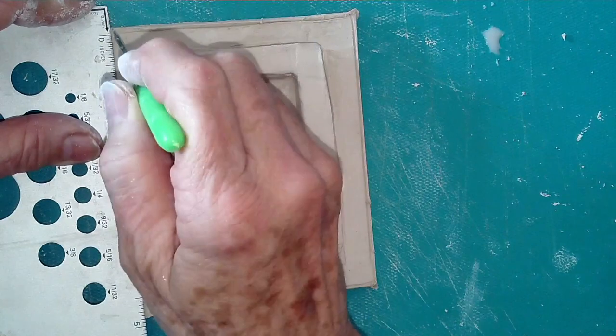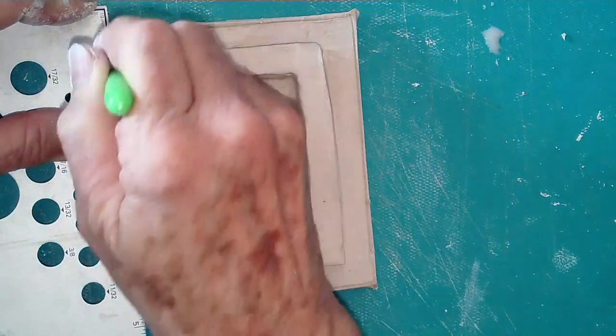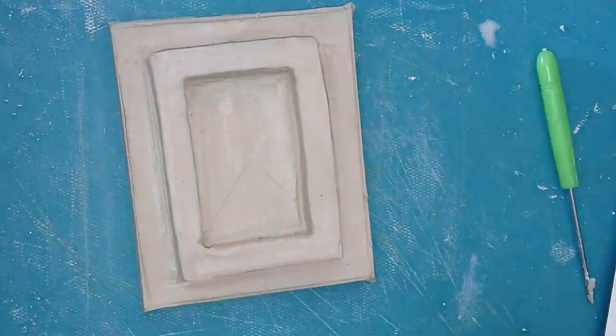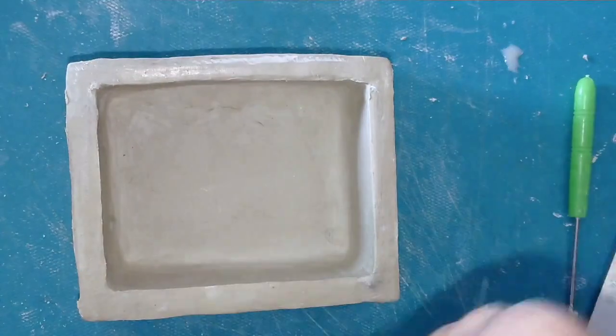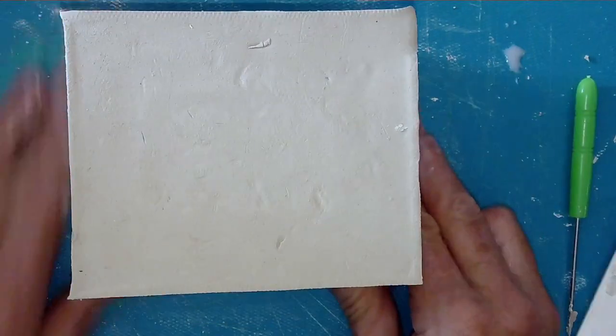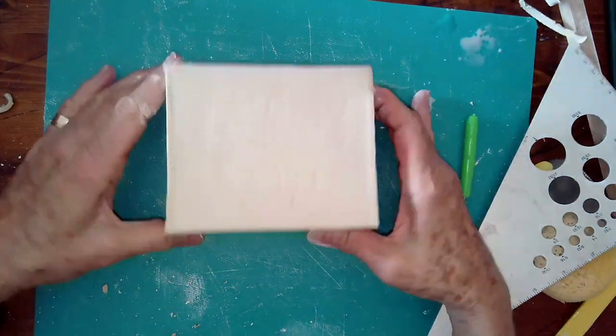And you do that with all four sides. So now it's starting to look like a lid with the flange. Check the fit. There should be a slight wiggle room.